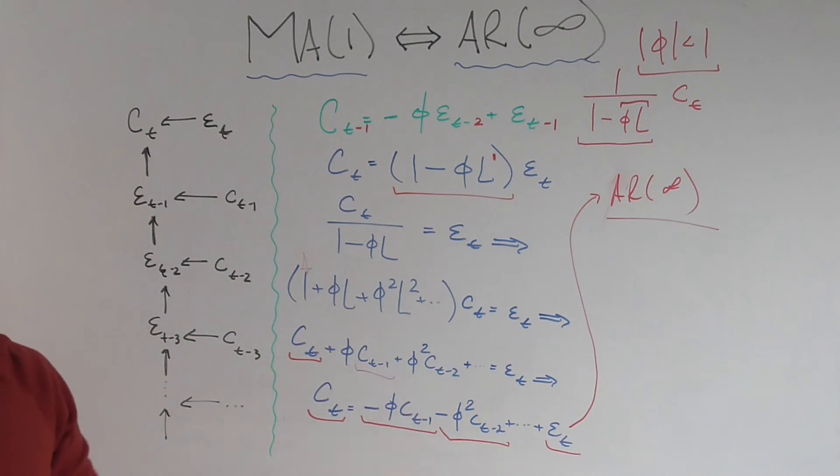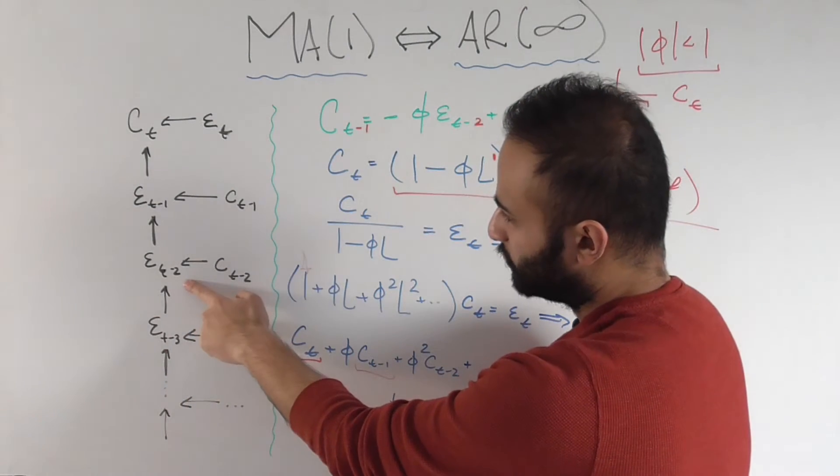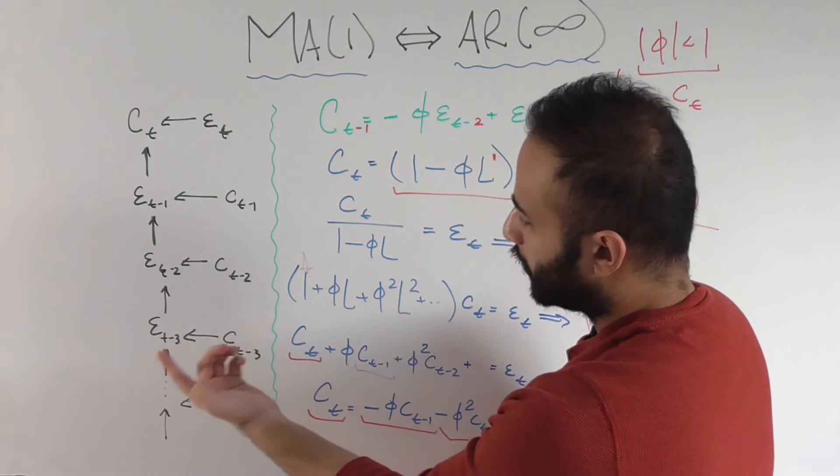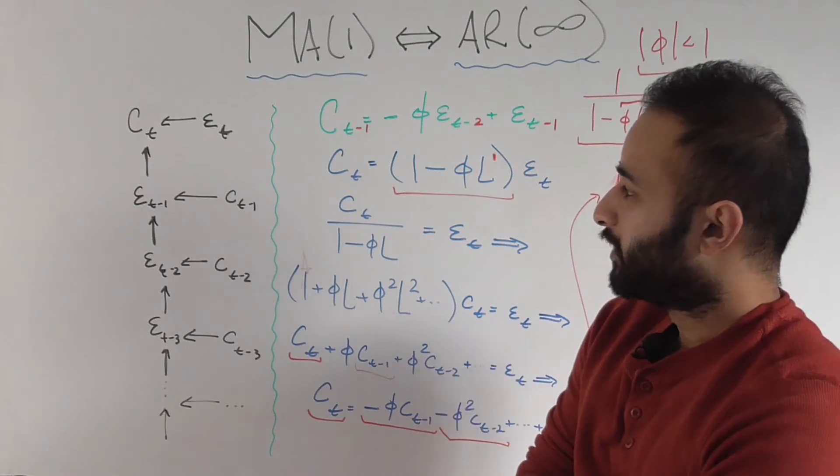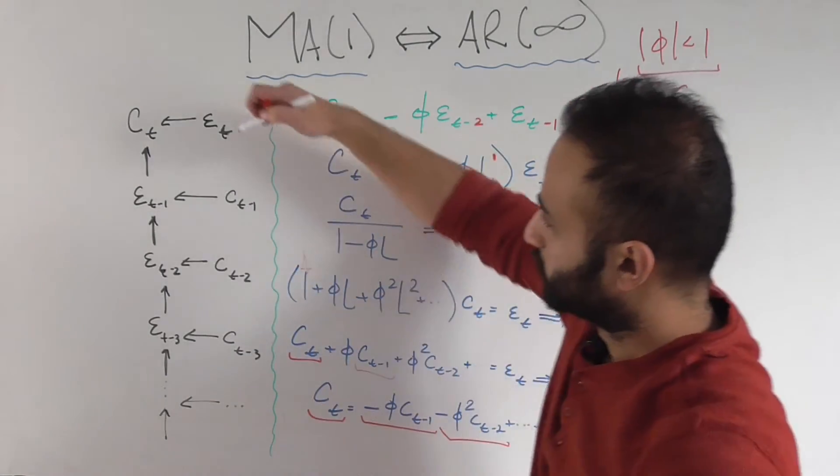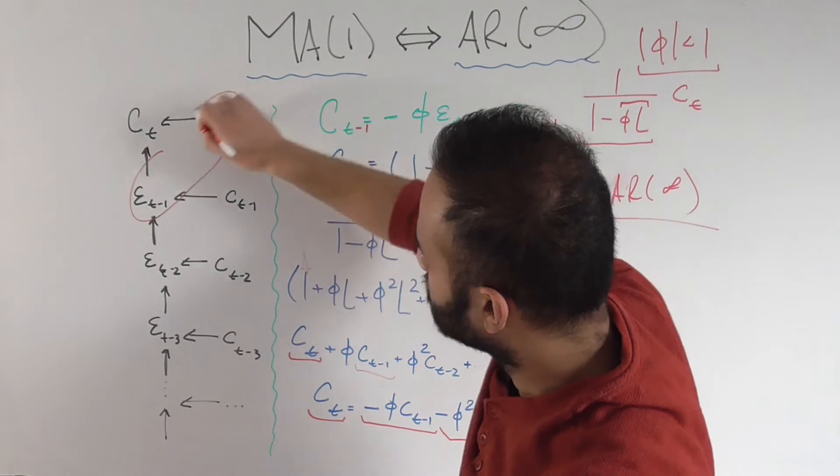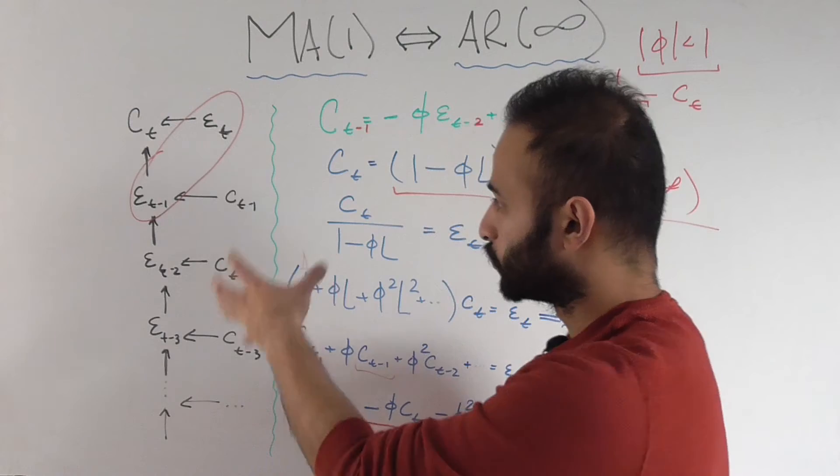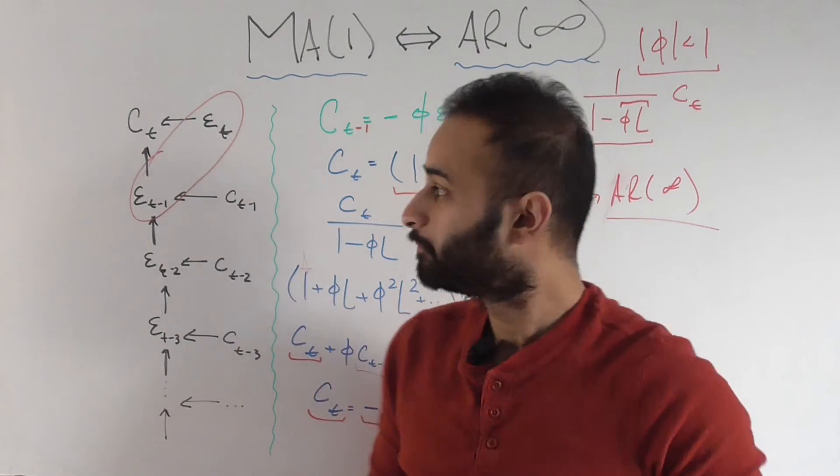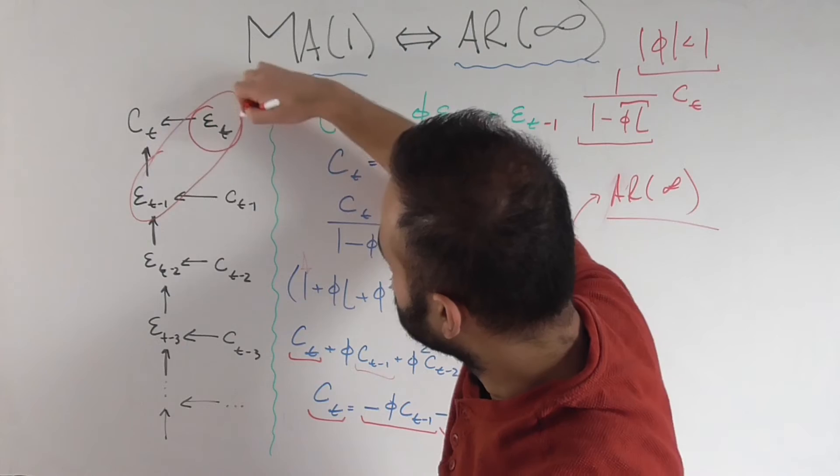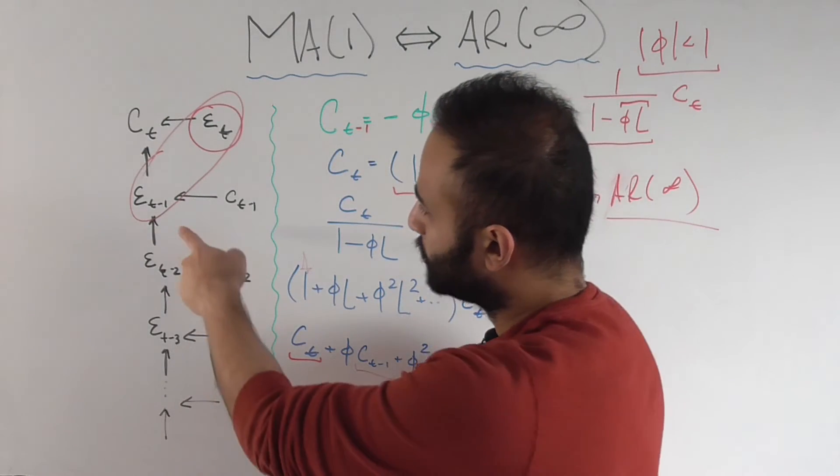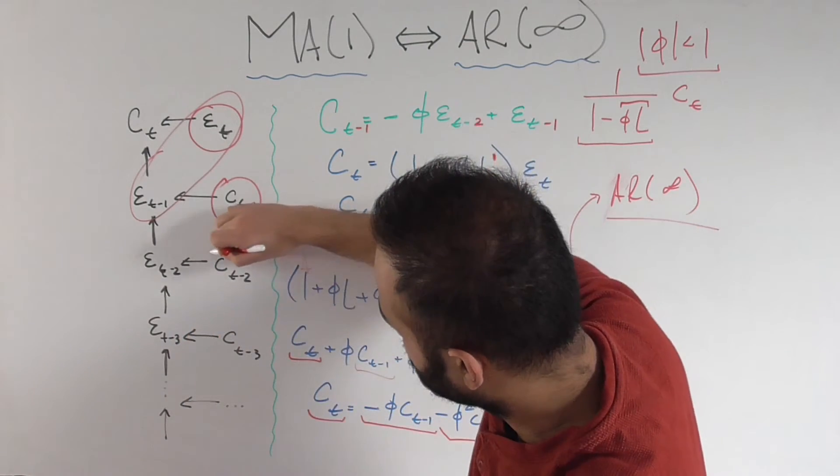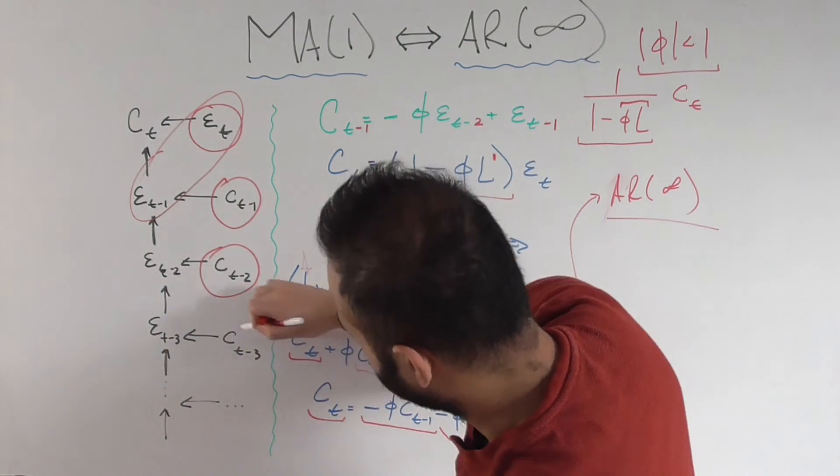Just going back further and further in time, we're going to find that epsilon sub T minus two is a function of C sub T minus two, epsilon T minus three. And then this just goes further and further and further. So basically, we can take this initial formulation, which said that C sub T is a function of these two guys. And we can just go down the chain. We can go down this kind of function or causal chain, whatever you want to call it. And we can show also that C sub T is a function of still epsilon sub T and epsilon sub T minus one, which is in turn a function of this and this, which is in turn a function of C sub T minus two, which is a function of C sub T minus three.